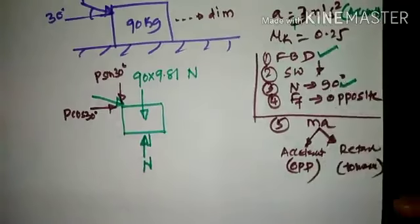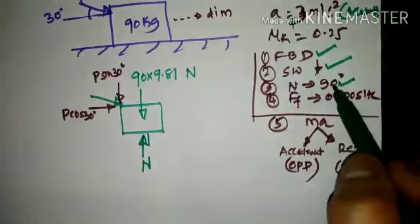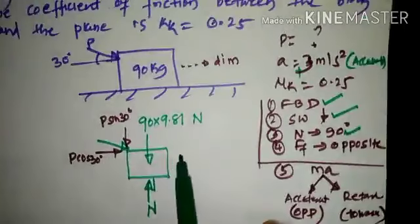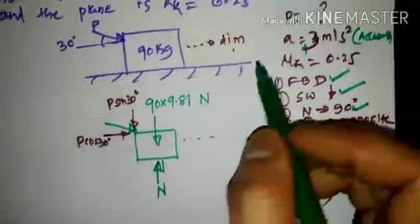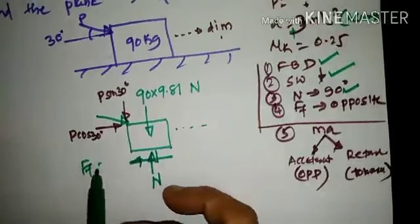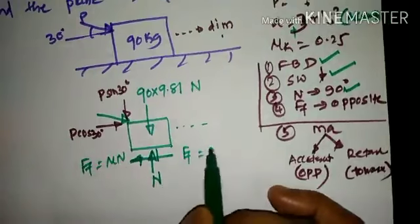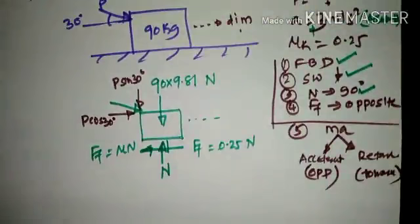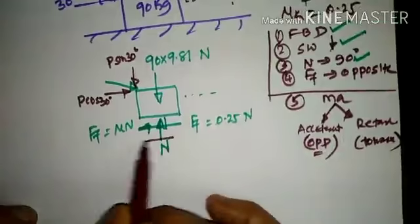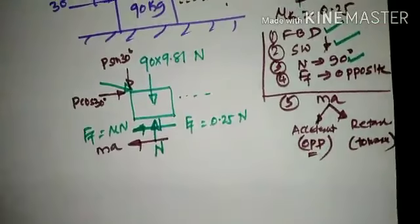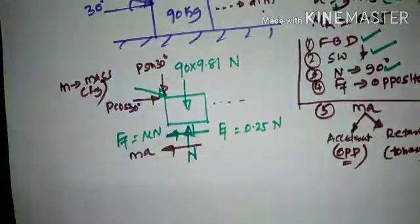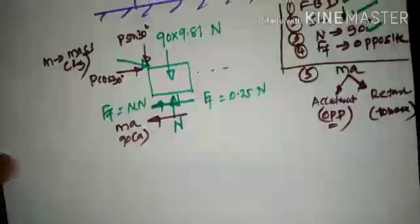In the free body diagram: self-weight is vertically downward, normal reaction is perpendicular to the plane of contact, and friction force is opposite to the motion of the body. As the body tends to move towards the right, friction force acts to the left, equal to μN = 0.25N. The inertia force also acts to the left, since it is a case of acceleration, and equals 90A.